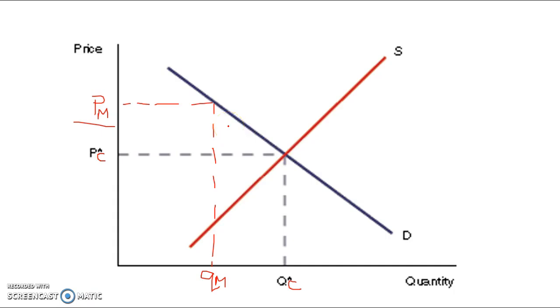So it's not allocatively efficient. It's not allocatively efficient, in short, whereas the competitive market was. And there's a smaller amount of people gaining this product. So sounds pretty bad. But the monopolist is doing that because they're going to make more profits than they would have if they'd have priced it at the competitive output.